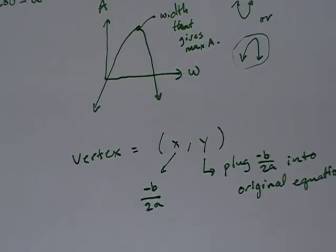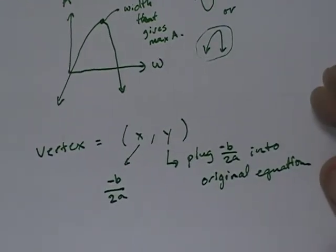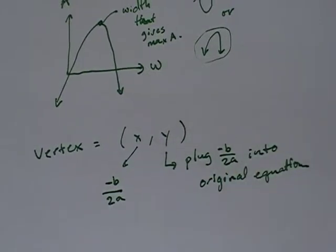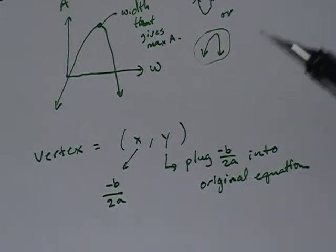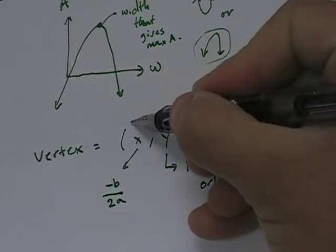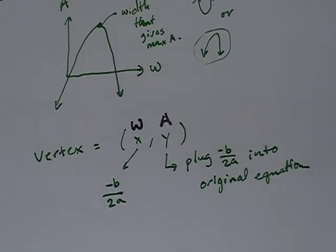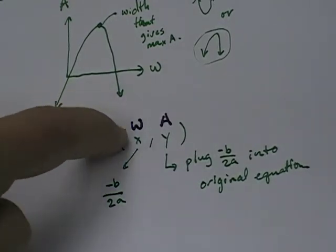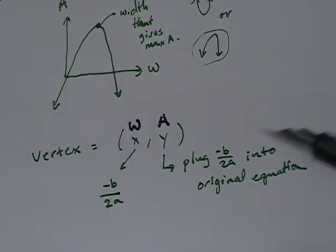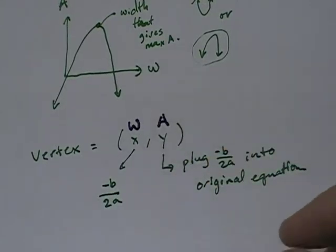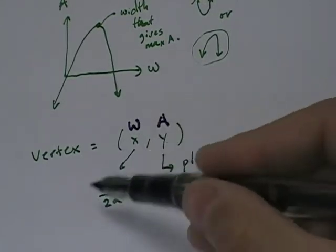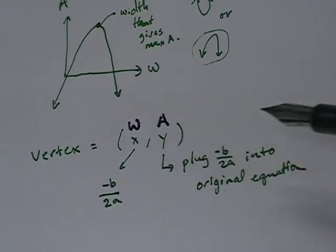Now, they didn't ask me for the area. They asked me for the length and the width that would maximize the area. So in our case, our x value was W and our y value was A. So if I can find this x value, W, that will tell me the width that maximizes the area. If I plug that in, that will tell me the maximum area.